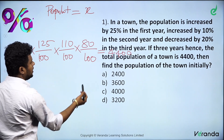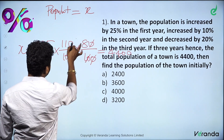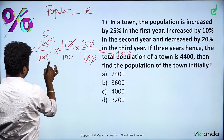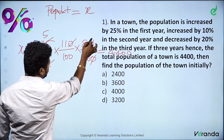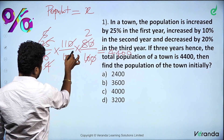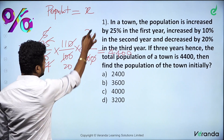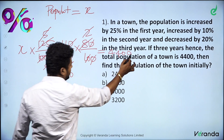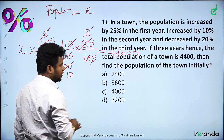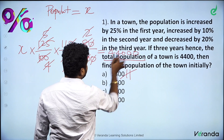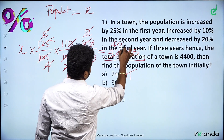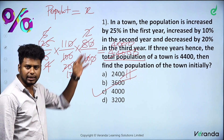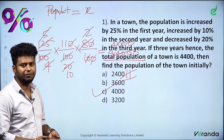So if we do this simplification, we can solve it. The zeros will cancel. If we multiply this through, 0s cancel out. We will get the answer straight away. So if we do this simplification, we can work it out step by step. The answer we get is 4000.